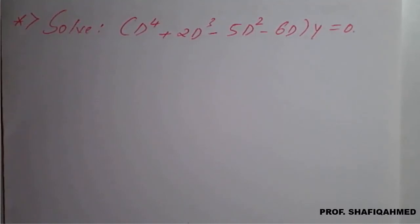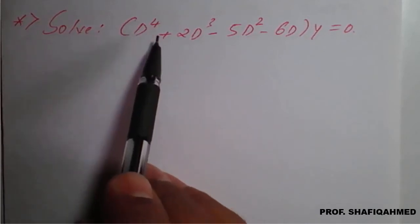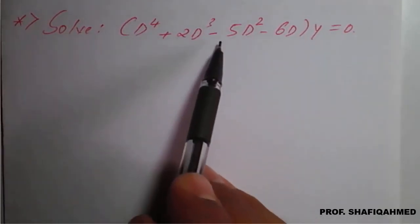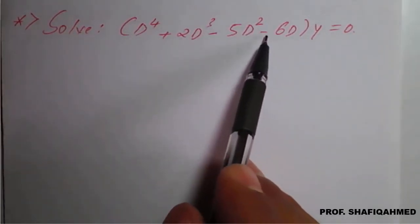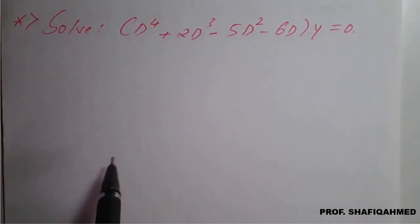Hello, everyone. In this lecture, we will see a problem on homogeneous differential equation. The problem is: solve d⁴ + 2d³ - 5d² - 6d of y equal to 0.